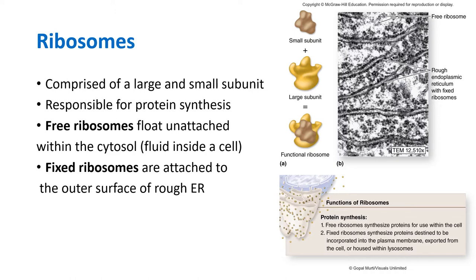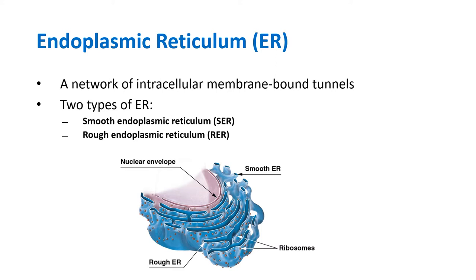The endoplasmic reticulum, found in eukaryotic organisms, looks like a bunch of tunnels. There are two groups: the smooth endoplasmic reticulum and the rough endoplasmic reticulum. The smooth ER is called smooth because its outer surface looks smooth — it does not have bumps. The rough ER, depicted here by those red bumps, has ribosomes on its surface, while the smooth ER does not.